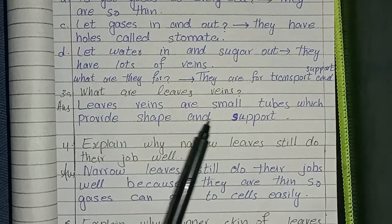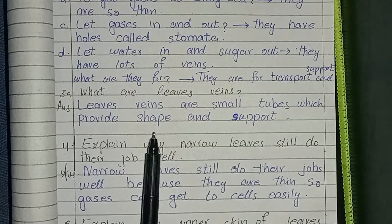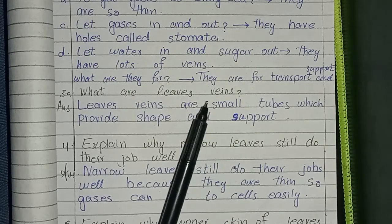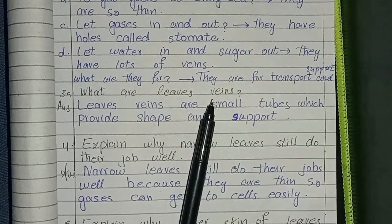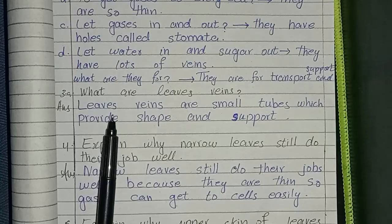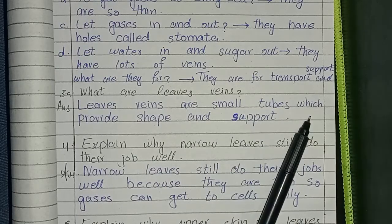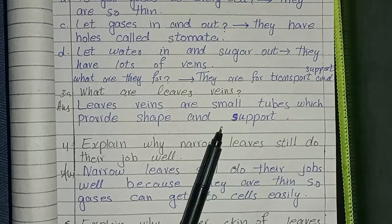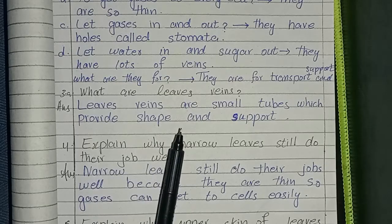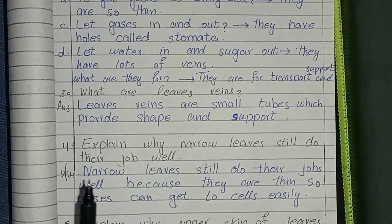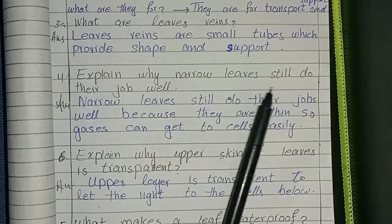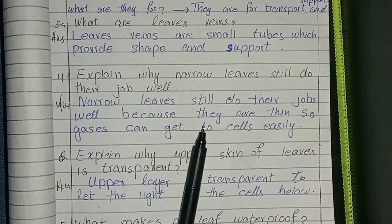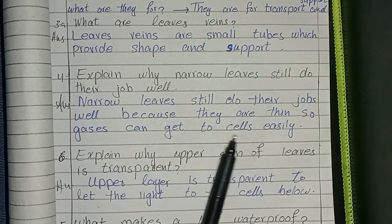Leaf veins are small tubes which provide shape and support to the leaves. Question: Explain why narrow leaves still do their job well. Narrow leaves still do their job well because they are thin, so gases can get to cells easily.